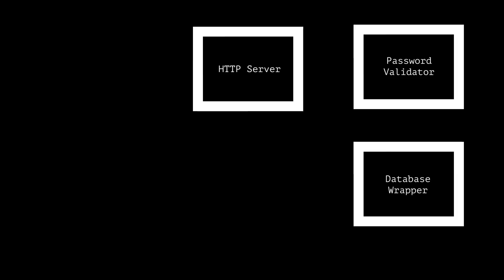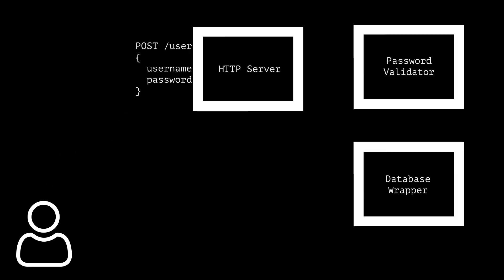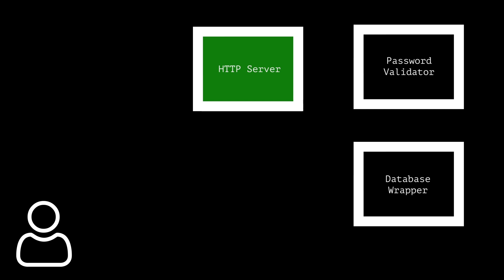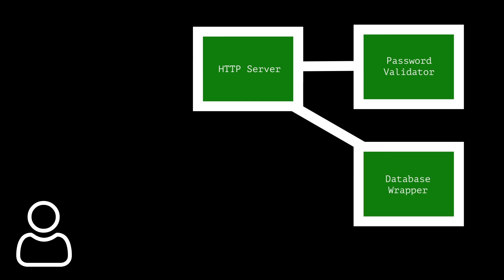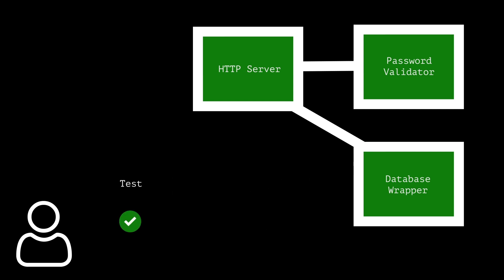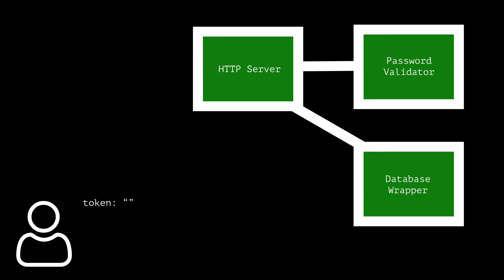We could write an automated test that makes a post request to our server to create a new user. The server might run some internal logic, maybe it validates the username and password, and then it will store it in the database. We could then write an automated test that queries the database directly and checks that the valid data got stored. Or we could write another HTTP request to maybe try and log the user in, and if the login is successful, we know everything's working.